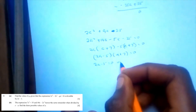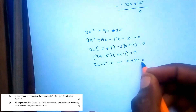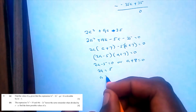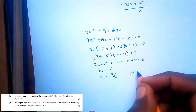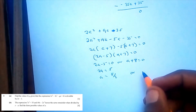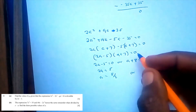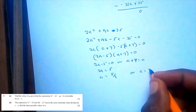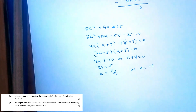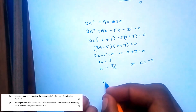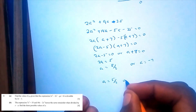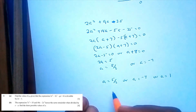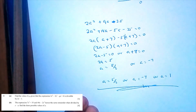So 2a minus 5 equals 0 gives a equals 5/2, and a plus 7 equals 0 gives a equals negative 7. Combined with our first value, the solutions are: a equals 1, a equals 5/2, or a equals negative 7.